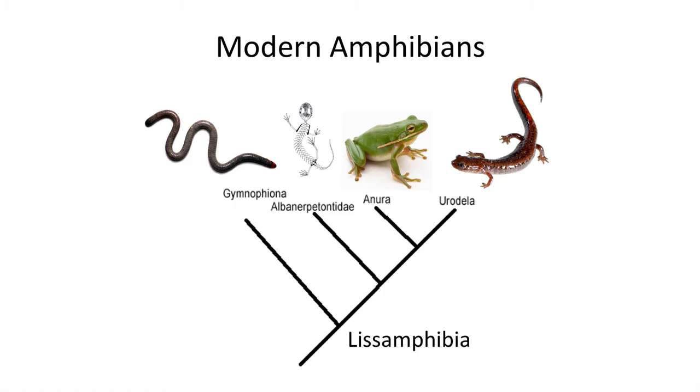Welcome to Utah State University's Vertebrate Paleontology course. My name is Benjamin Berger, and in this lecture we will discuss the origin and evolution of frogs, salamanders, and caecilians — the Lissamphibia, the modern amphibians — during the Mesozoic and Cenozoic. The Lissamphibia is a monophyletic clade that includes modern amphibians, as well as one extinct group called the Albanerpetontidae.